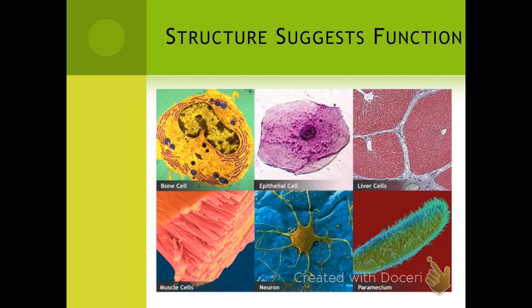In a multicellular organism, the organism increases its efficiency overall by differentiating its cells. Having a cell do one job rather than many makes the whole organism more efficient. However, we have to keep in mind that a specialized cell is now completely dependent on the function of the organism as a whole. Now that these cells have specialized, they are not able to survive on their own — becoming more efficient has in a way limited them as individuals.